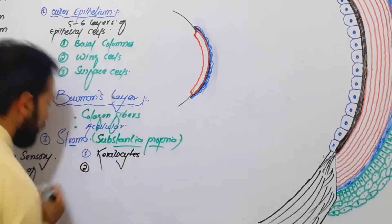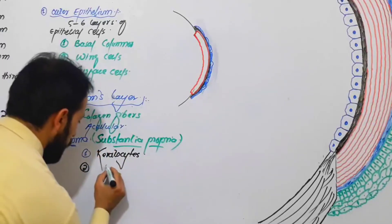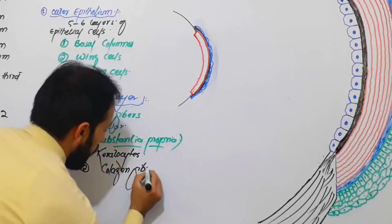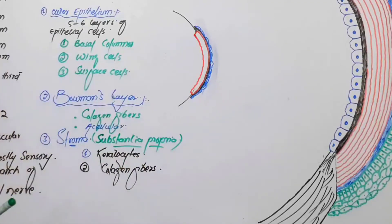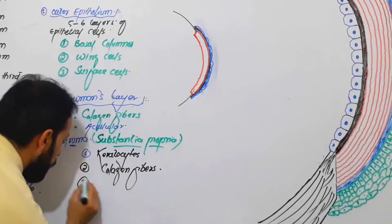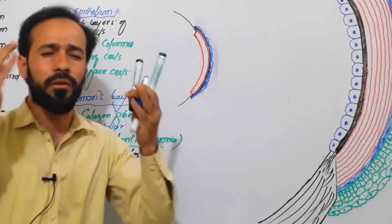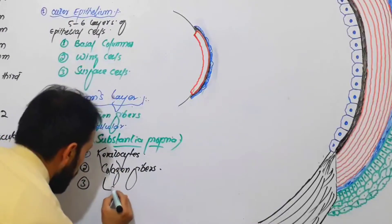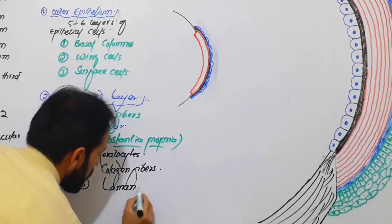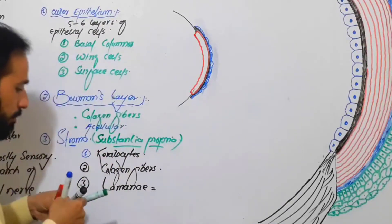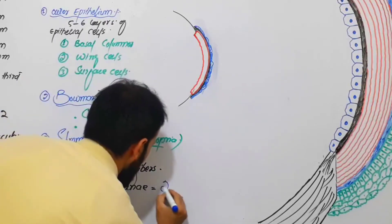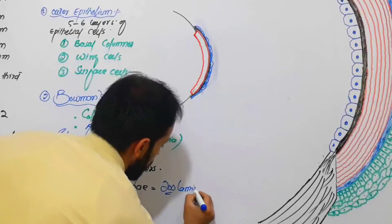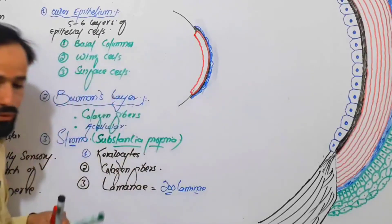The next important thing in the stroma is that it contains lots of collagen fibers. These collagen fibers are arranged in a very special manner called laminae, and there are about 200 laminae.